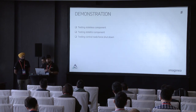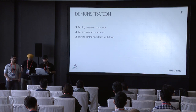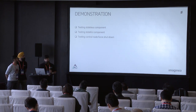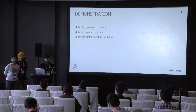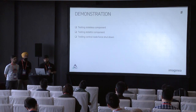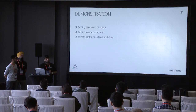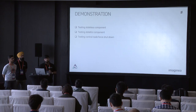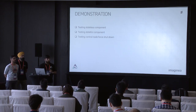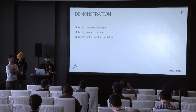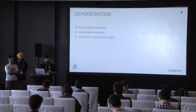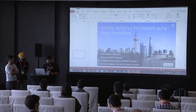In today's demo we'll cover three scenarios: testing stateless pods, testing stateful components, and bringing down one of the controller nodes to see how the system behaves. For stateless testing there are two parts: triggering GET calls like Nova list on Nova API pods while killing those pods, and sending POST traffic to Nova by killing conductor pods while creating VM boot requests.